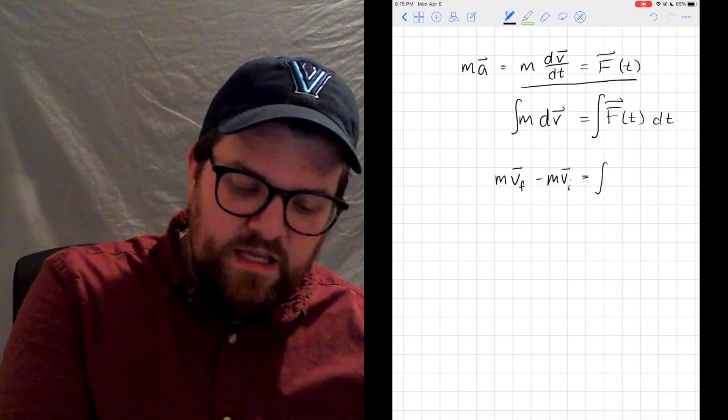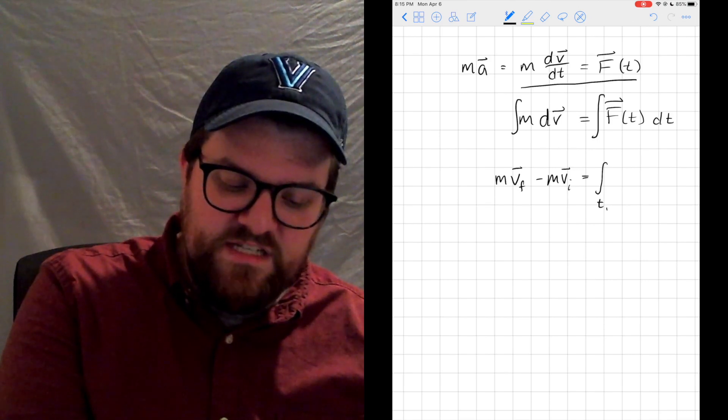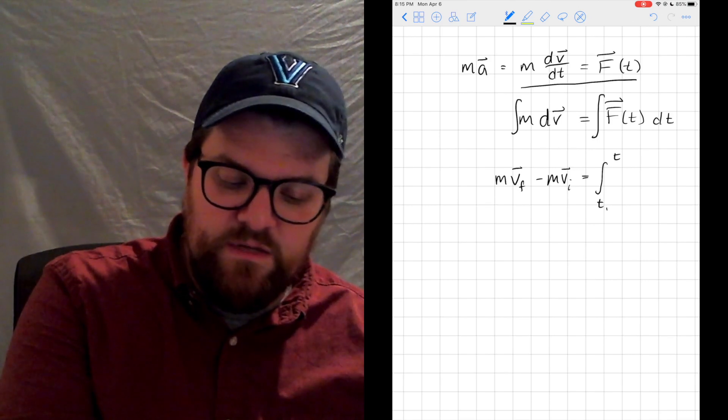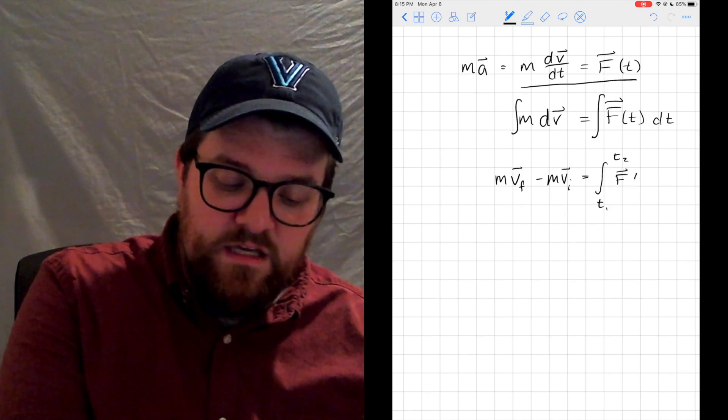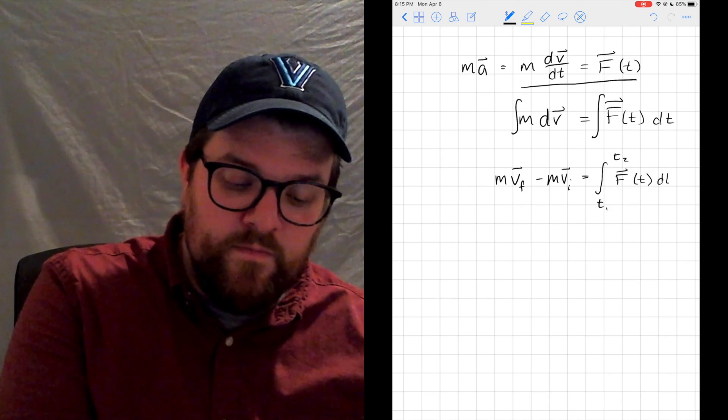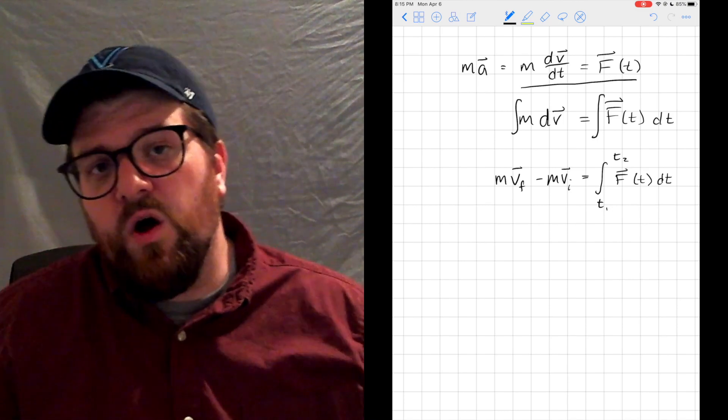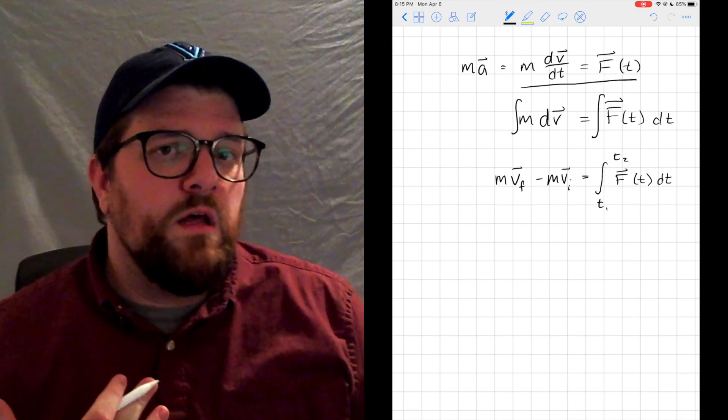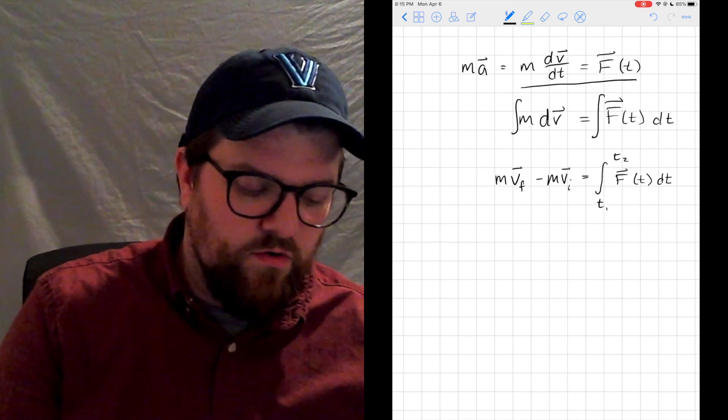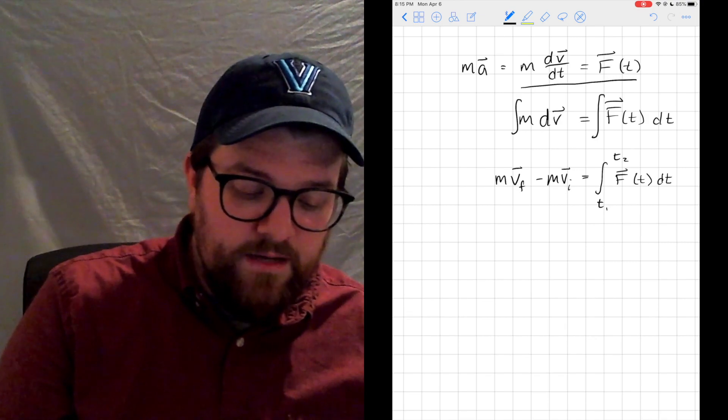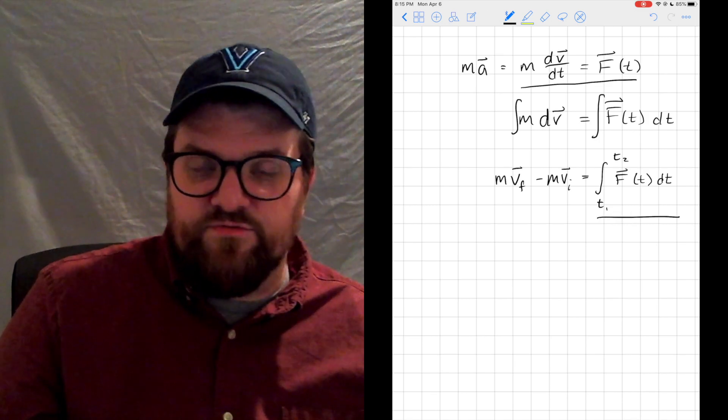On the right hand side, I'm going to leave it as an integral. I'm going to say from t1 to t2, or t_i to t_f, of F(t) dt. I don't know what the functional form that F is going to take, so I'm just going to leave it as this integral here.